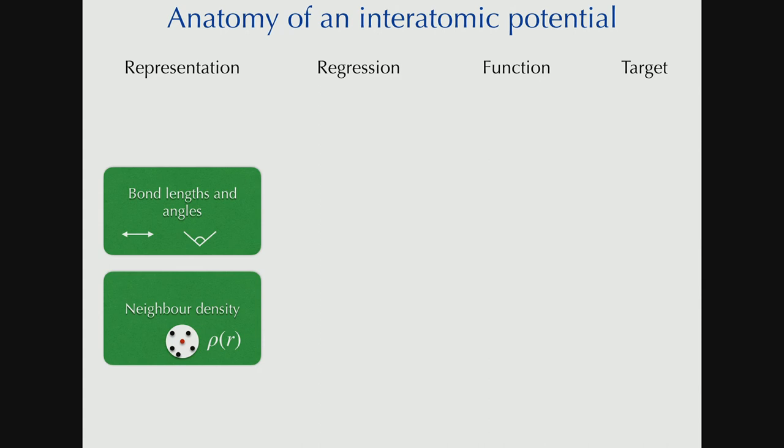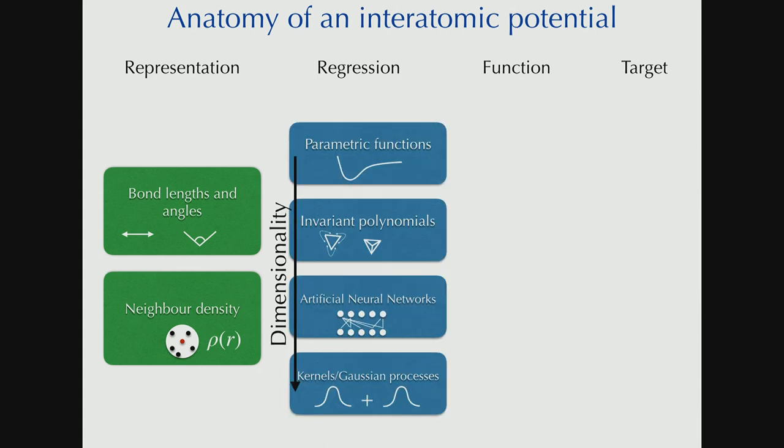So traditionally, in potential making, people are representing configurations using bond lengths and angles and maybe torsions. I want to tell you about, in the next couple of slides, how we represent configurations by their neighbor density. We want many body representations, not just bond lengths and angles. So I want to think about the complete environment of an atom.